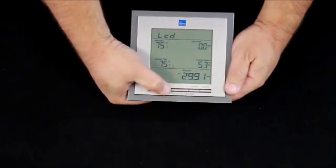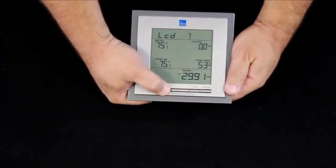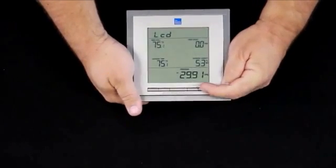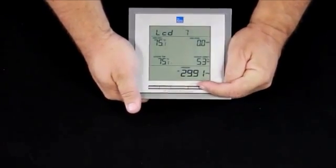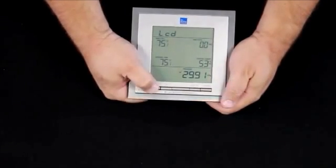That number tells us how the density of the display is going to be. Using the plus button, we can make the display denser as far as the way things look. Using the min-max button, we can back that off. Pressing set once again.